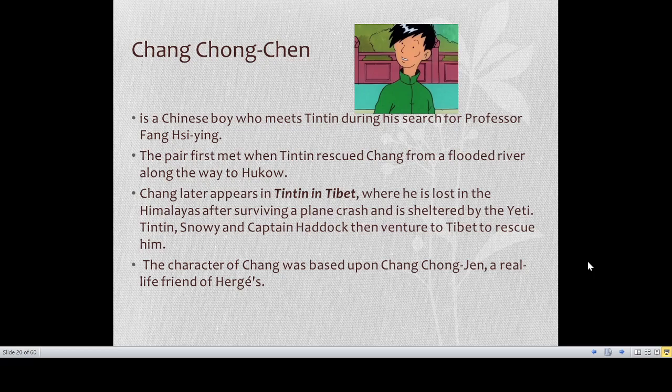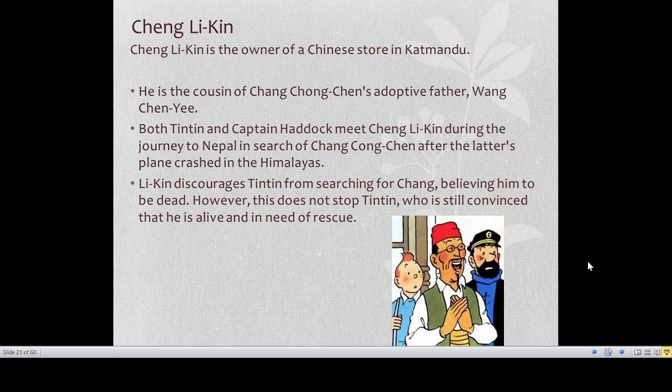Chang Chong Chen is a Chinese boy who first meets Tintin during his search for Professor Fang Hsi-ying in The Blue Lotus, where Tintin rescues Chang from a flooded river along the way to Hankow. Chang later appears in Tintin in Tibet, where he is lost in the Himalayas after surviving a plane crash and is sheltered by the Yeti. Tintin, Snowy, and Captain Haddock then venture to Tibet to rescue him. Chang Li Kin is the owner of a Chinese store in Kathmandu and the cousin of Chang Chong Chen's adoptive father. He discourages Tintin from searching for Chang, believing him to be dead, but this does not stop Tintin.